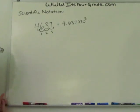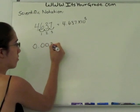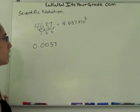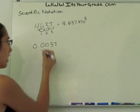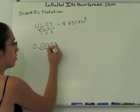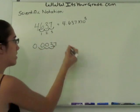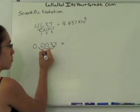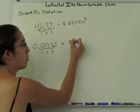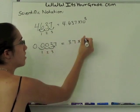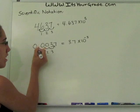But what happens if the number is less than 1? So we have 0.0037. Now our exponent is going to be negative, so we have to move the decimal to the right: 1, 2, 3. We stop here because this will give us a number between 1 and 10. We move the decimal 3 places, so we have 3.7 times 10 to the negative third, because it's a number that's less than 1.